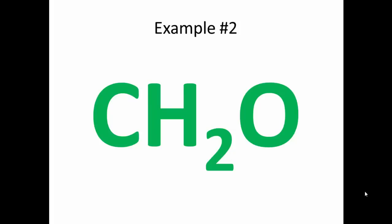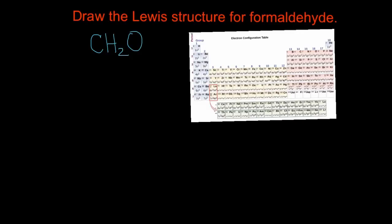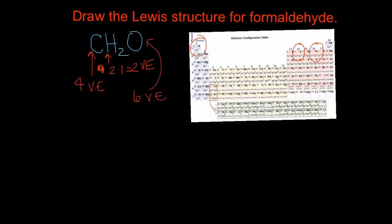Let's do a second example: CH2O, or formaldehyde. We always start by drawing the molecular formula, which is CH2O. Next, we count the total valence electrons. Carbon is in group 4A and has four valence electrons. Each hydrogen atom has one valence electron. Oxygen is in group 6A and has six valence electrons. So in total, we have 12 valence electrons for formaldehyde.